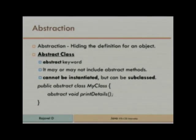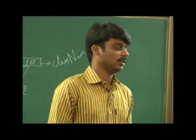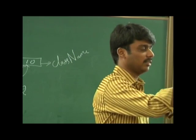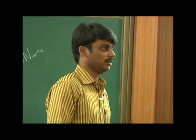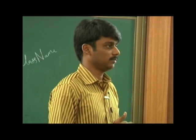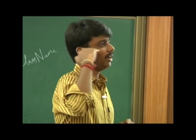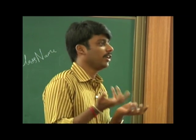For abstract: we use the keyword 'abstract'. We cannot instantiate an abstract class, but we can subclass it — we can reuse it. Based on our requirement, the abstract class may or may not have abstract methods. If a method is abstract, it means it does not have a definition.